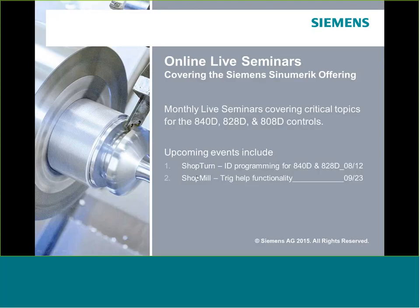We have a couple of additional events coming up. Our next seminar will be ShopTurn or turning-specific, looking at how to handle ID programming in a lathe — covering the unique differences compared to OD jobs. After that, we're doing one called 'Trig Help Functionality,' showing how the control can figure out data points when you have limited information. That applies to both milling and turning. Those are coming up in August and September.